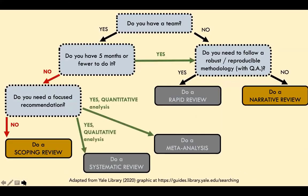If you have a team — even just two to three people — it depends on how much time you have. Fewer than five months, you probably do a rapid review. With six, eight, ten months, or a year, ask yourself: am I looking for a focused recommendation or specific question? If not, and you want to survey the literature, do a scoping review. If you need a focused recommendation with thoughts of changing practices, you can go the quantitative route — a meta-analysis — or the qualitative route — a systematic review.